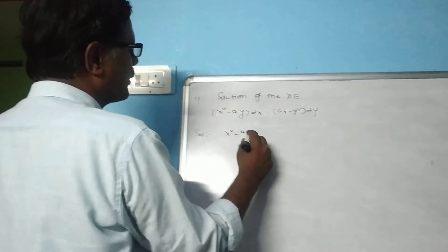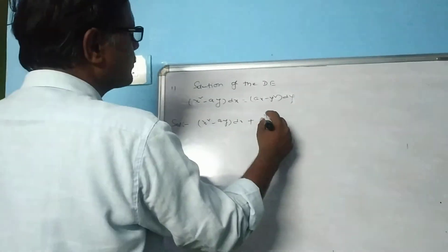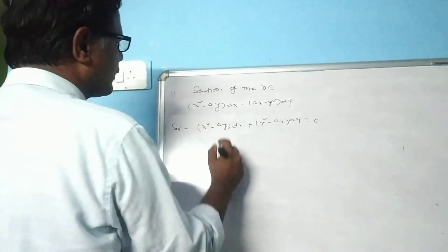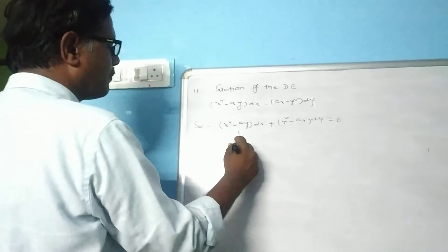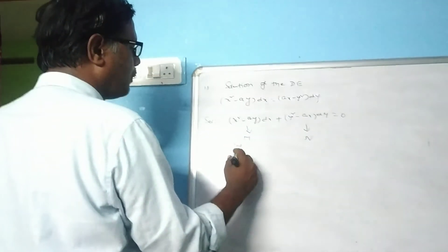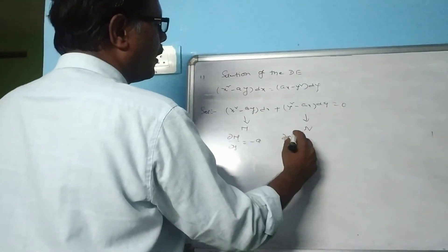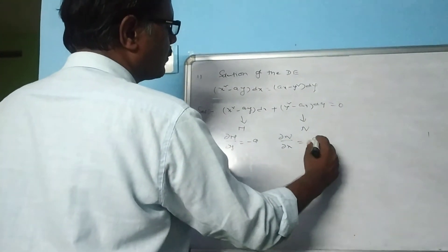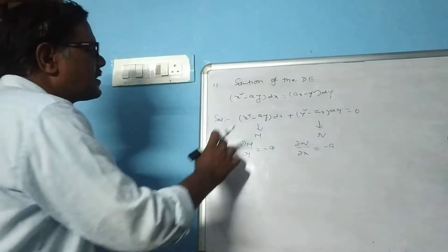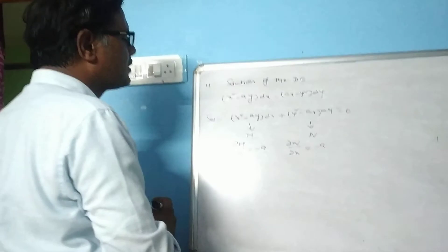Next problem: (x² - ay)dx plus (y² - ax)dy equals 0. Here M equals x² - ay and N equals y² - ax. So ∂M/∂y equals minus a and ∂N/∂x equals minus a. These two are equal, so this is an exact differential equation.